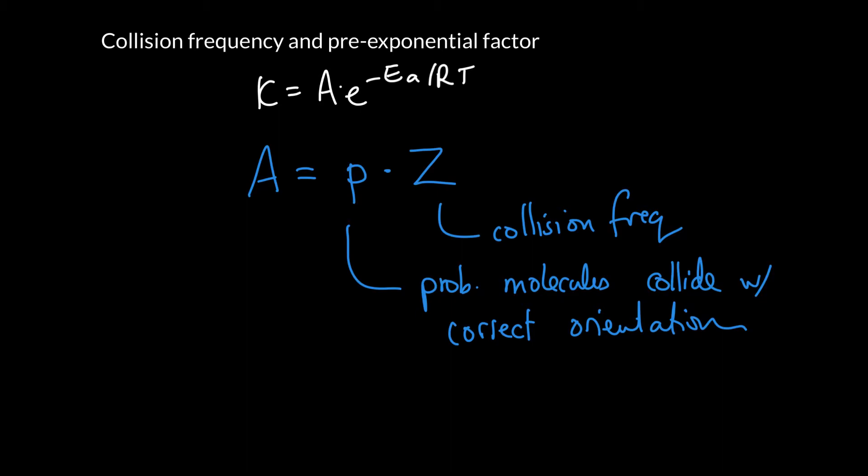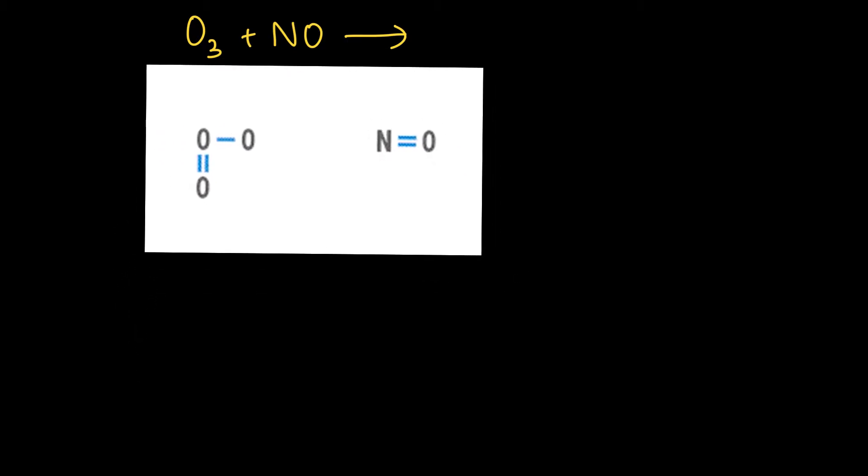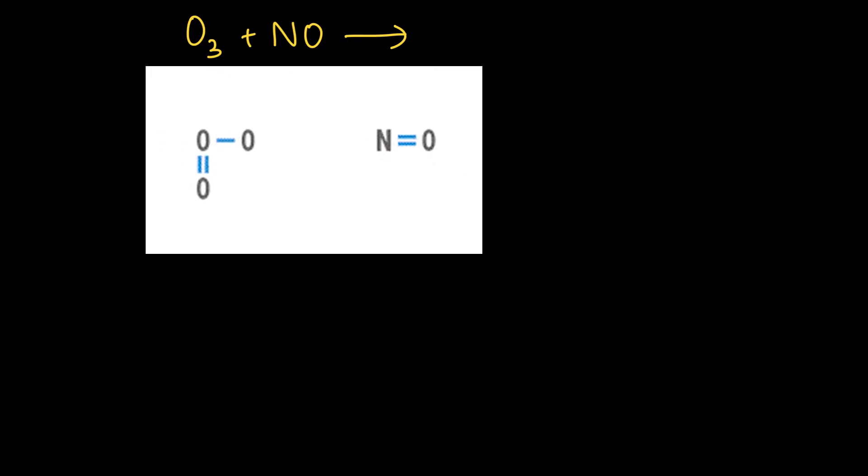Let's take a look at a couple of different animations and see what exactly we mean by this probability factor. Let's look at a chemical reaction between ozone and nitric oxide. These two molecules can react and form products. The first thing that has to happen is the molecules have to collide. Let's take a look at this video together.